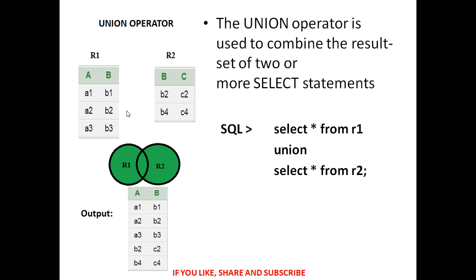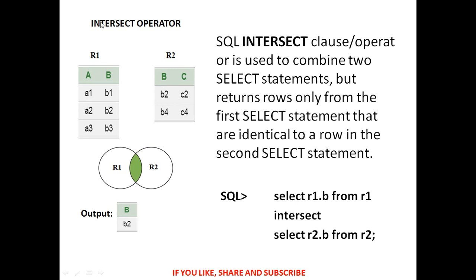Union operator: the union operator is similar to full outer join. The UNION operator is used to combine the result set of two or more SELECT statements. The SQL query is: SELECT * FROM R1 UNION SELECT * FROM R2, and this gives the values of both tables.